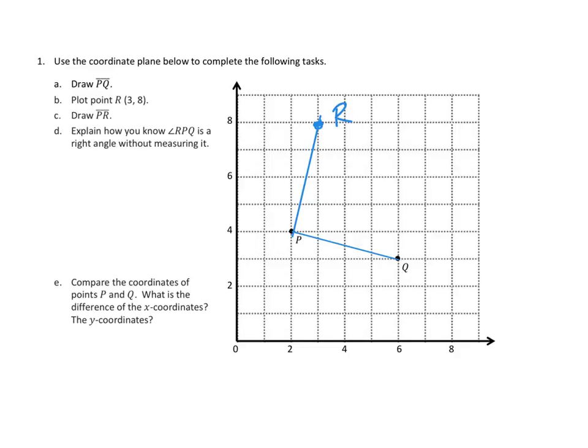Now what's D? Explain how you know that angle RPQ is a right angle without measuring it. I'm remembering my angle is described by one of the vertices, so R, then the main point at the main angle, and then Q. So RPQ. How do I know that that is a right angle without even measuring it? I have to agree, it does definitely look like a right angle. What I remember from yesterday is that we used the triangles formed by each of the line segments to figure this out.